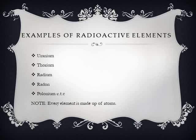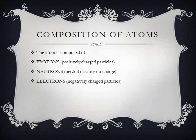Every element is made up of atoms. The atom is composed of three distinct particles: we have the protons, we have the neutrons, and we have the electrons. The protons are positively charged particles. The neutrons are neutral — that is, they carry no charge. The protons and neutrons together are found or located in the nucleus of every atom of an element. The electrons are negatively charged particles.